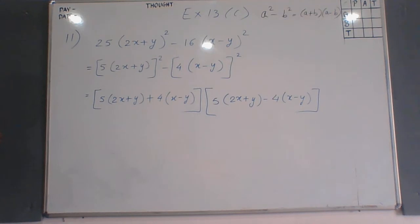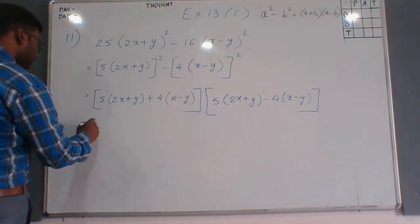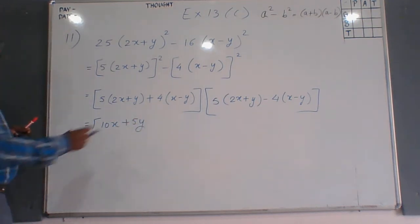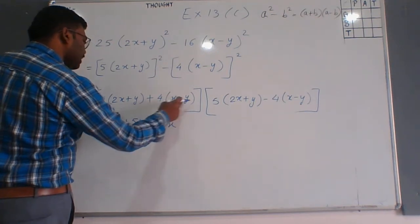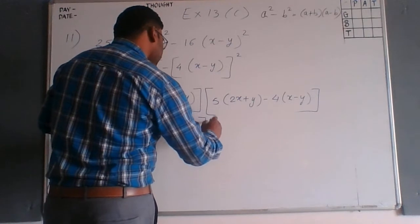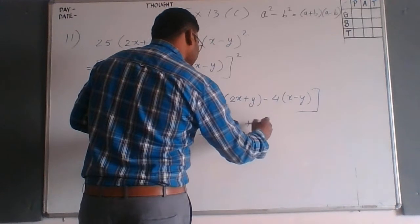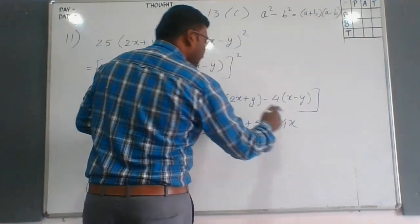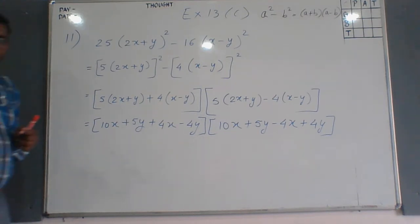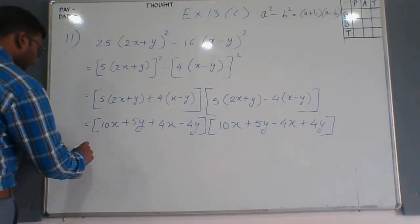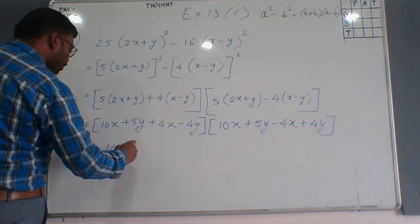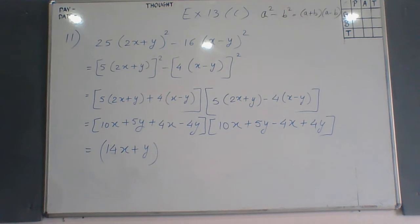Now let us simplify these brackets. In the first bracket: 5×2x is 10x, 5×y is 5y, plus 4x and minus 4y. In the second bracket: 5×2x is 10x, 5×y is 5y, minus 4x, and minus minus becomes plus 4y. Now combining like terms: 10x plus 4x gives 14x, and 5y minus 4y gives y, so the first bracket is (14x+y).